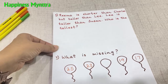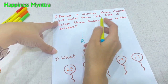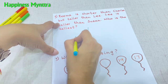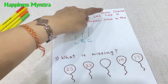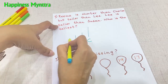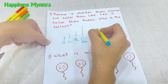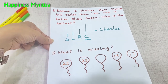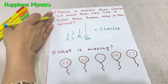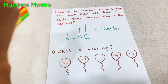Reema is shorter than Charles but taller than Lee. So Reema is here — she is shorter than Charles, so Charles is taller. Taller than Lee means Lee is shorter. Lee is taller than Susan, so Susan comes below Lee. Who is the tallest? Charles is the tallest. Once we actually solve it, it's really simple. It will help children to analyze, apply logic, and figure out particular answers.